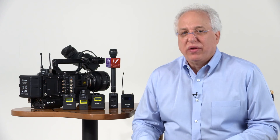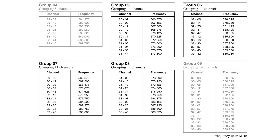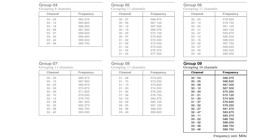If you need at least 11 compatible channels at one time, you can use groups five through eight, which use some frequencies from each of two different TV channels. Depending on which channels are used by a TV station in your area, pick the appropriate group that uses your combination of open channels. And if you need at least 16 different compatible channels, use group nine — a scan in group nine will do a very fast scan of compatible frequencies from all four TV channels in your chosen block.